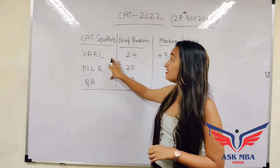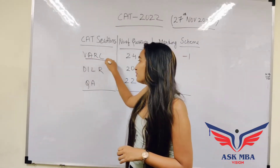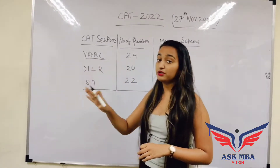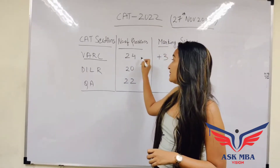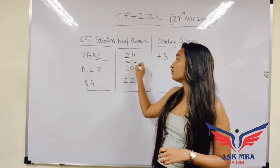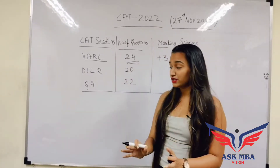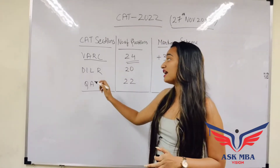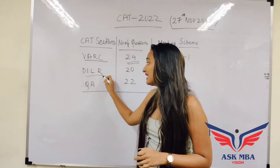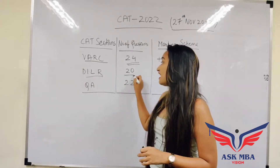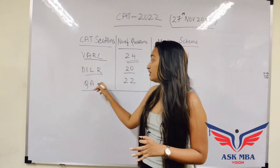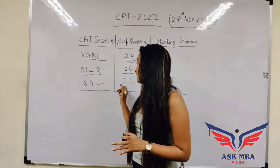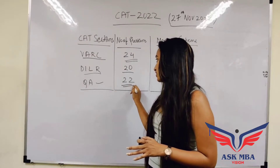As you can see on the board, you have your Verbal section. Verbal in the CAD examination will consist of a total of 24 questions. Then you have DILR which will have 20 questions, and QUANT will have 22 questions.